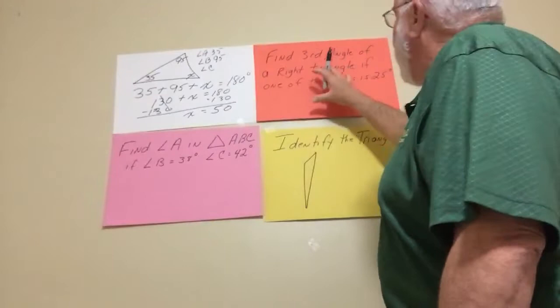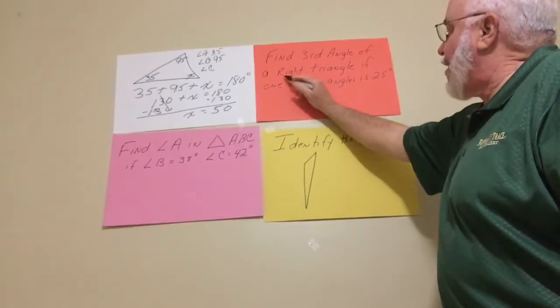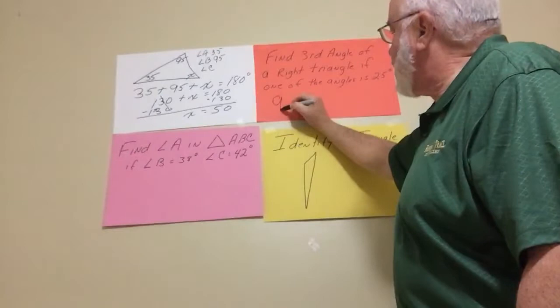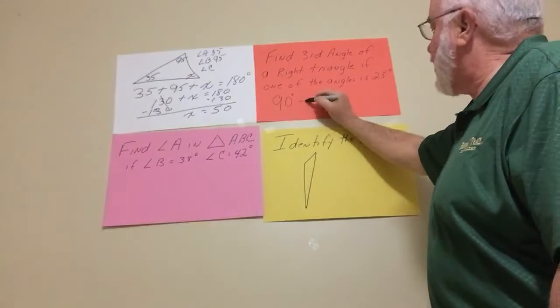Same thing here. Only thing here is they're telling you it's a right triangle. So that's our clue. Once they say a right triangle, we know one of the angles is 90 degrees.